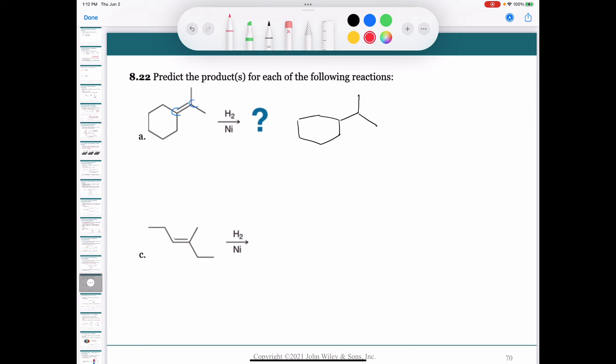In the second example, I have my two carbons of my double bond. One of them already has a hydrogen attached to it, so when I add a hydrogen there, I won't be making a chiral center. However, when I add a hydrogen to this carbon, I will be creating a chiral center.